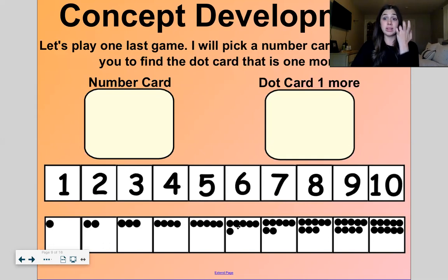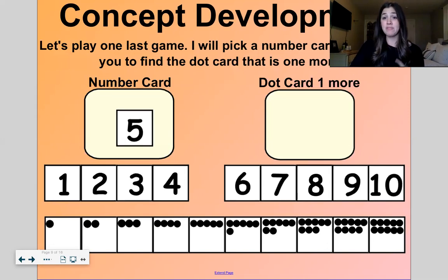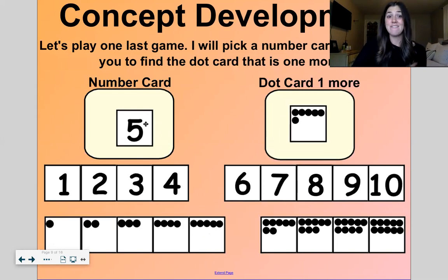Okay, we're gonna play one last game now. I'm going to pick a number card, and I want you to help me find the dot card that is one more. So I picked five, now let's come down here, here's five, I have five, one more is six, five, one more is six, good.